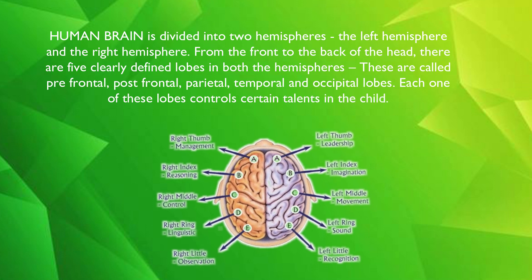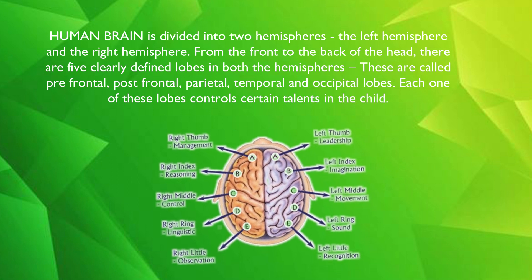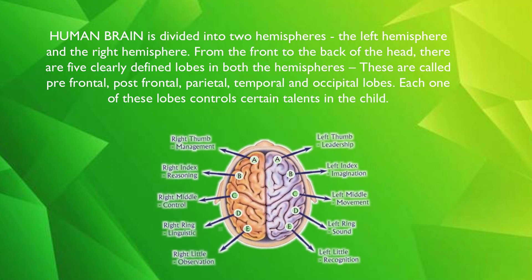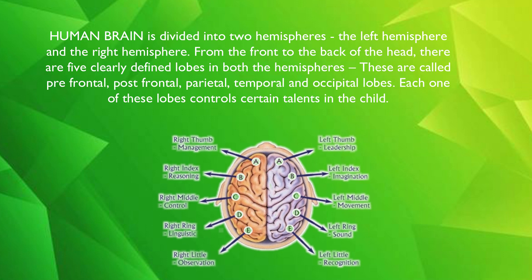Each one of these lobes controls certain talents in the child. If the child is blessed with a particular talent, the lobe controlling that talent is relatively healthier than the other lobes, and vice versa.